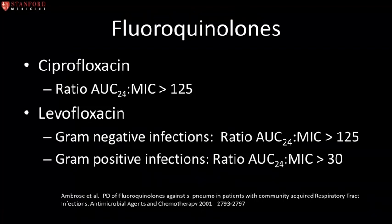Fluoroquinolones are another class of antibiotics that display concentration-dependent activity. The PKPD measure for fluoroquinolones is the 24-hour area under the curve to MIC ratio. An AUC-to-MIC ratio of greater than 125 correlates with optimal clinical and microbiologic outcomes in seriously ill patients infected with gram-negative enteric pathogens as well as Pseudomonas. The fluoroquinolone goal AUC-to-MIC ratio varies depending on the target organism; for respiratory tract infections involving Streptococcus pneumoniae, the free drug 24-hour AUC-to-MIC ratio associated with high probability of bacterial eradication is around 30, significantly lower than the goal AUC-to-MIC for gram-negative microorganisms.